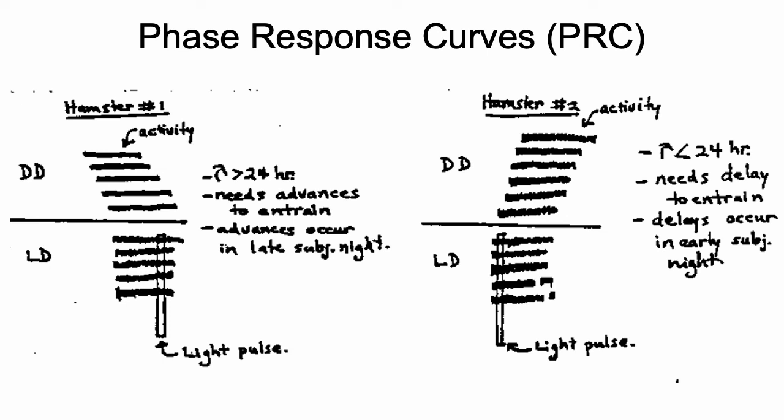Let's take a look at this hand-drawn graph. Hamster one is an individual that has a tau greater than 24 hours. It's slanted down and to the right in its free run dark conditions. So just naturally, relative to our 24-hour period, it's got a little bit of a delay every day. If this is a 25-hour tau, then it's got an hour delay every day. So this needs to advance in order to stay in sync with 24 hours. When do you need light to get a phase advance? You need a phase advance during late subjective night, which is what the light pulse here during LD is showing. And that entrains the animal.